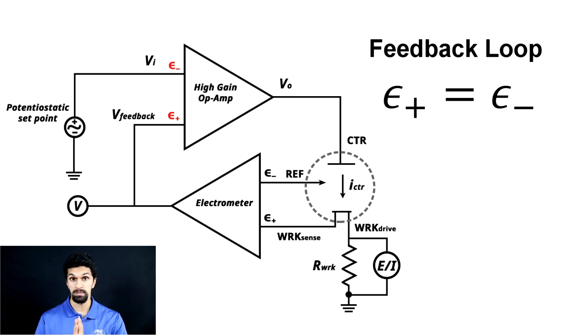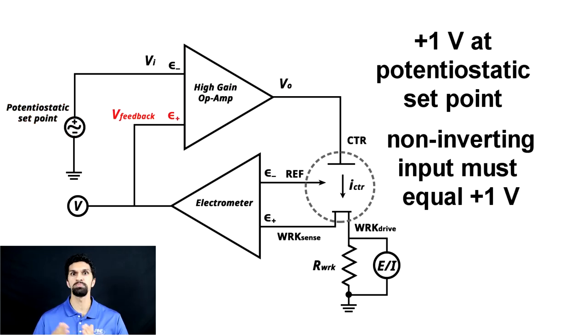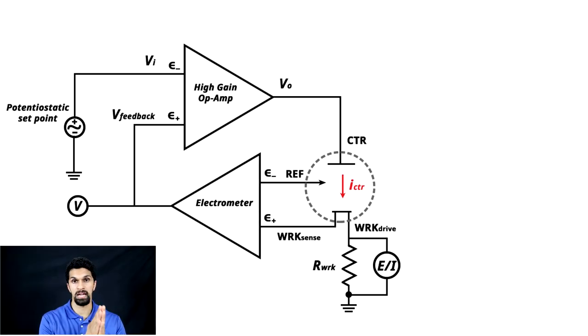The voltage difference between the reference electrode and the working sense electrode is fed into the electrometer, and its output is measured at the voltmeter but also fed into the non-inverting input of the high-gain op amp. For an op amp with a feedback loop, the inverting and non-inverting inputs are forced to equal each other. So unless the non-inverting input equals the setpoint of +1V, the output voltage from the high-gain op amp will continue to adjust the counter electrode voltage until both inputs are equal — this is how the potentiostat maintains a constant potential with respect to the reference electrode.